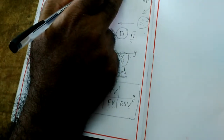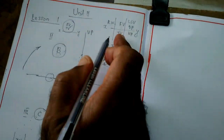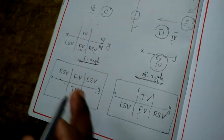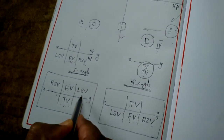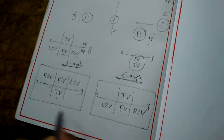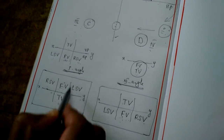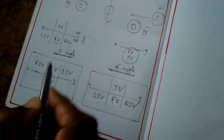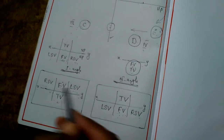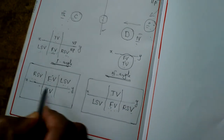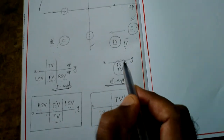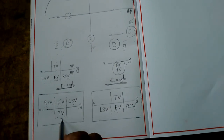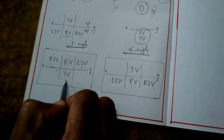In first angle projection method, these are the locations to follow when solving problems. First, draw the reference line XY; then draw the front view above it, the top view below it, the left side view to the right, and the right side view to the left. If a problem asks for both side views, draw both. Sometimes objects are symmetrical, so the left and right side views are the same size and shape — in that case, drawing one is enough. In most cases, problems will ask to draw projections of points, planes, or lines — meaning front view and top view only. Only if three views are requested do you also draw side views.